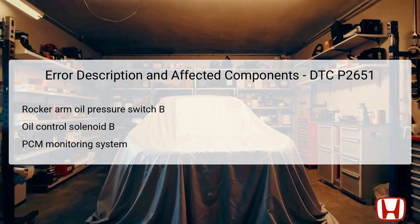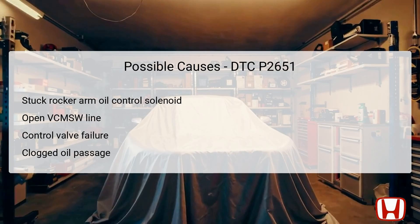Thus, both the accuracy of the rocker arm oil pressure switch B and the functionality of the rocker arm oil control solenoid B are crucial for maintaining the desired engine performance and efficiency. Understanding the potential causes of DTC P2651 is essential for effective troubleshooting. The first and often most common cause is a stuck rocker arm oil control solenoid B, bank 1. If this solenoid fails to actuate, it will prevent proper oil flow, thereby affecting pressure readings and consequently triggering the DTC. Another possible cause might be an open VCMSW line, which can disconnect the communication pathway between the rocker arm oil pressure switch and the PCM, thus leading to a malfunction in monitoring.